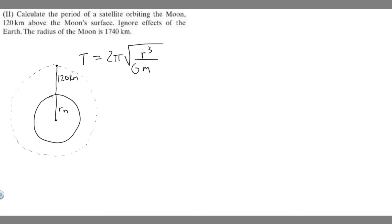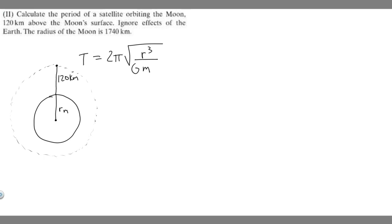Let me explain what each variable is, and then we're going to try and find it. T, which is our period, is 2π times the square root — and keep in mind, this whole thing is in the square root. The radius R is going to be this distance — from the center of the thing we're rotating around to the satellite. That whole distance is R.